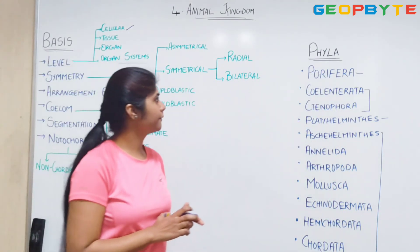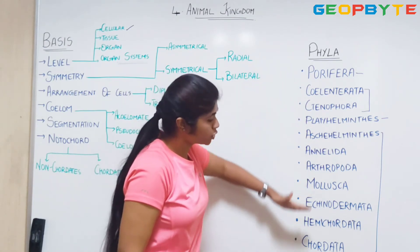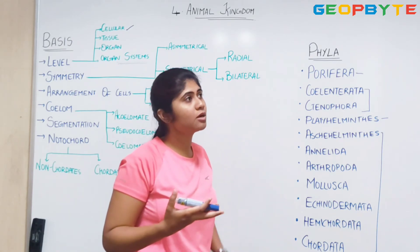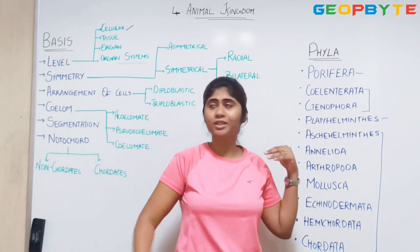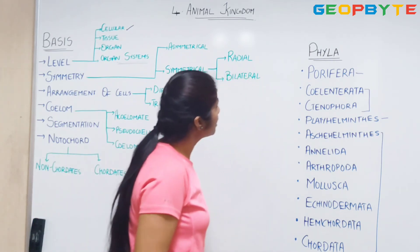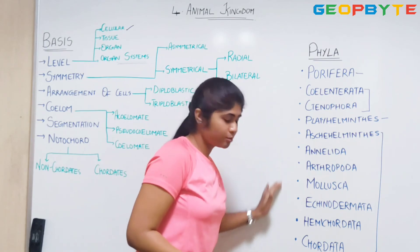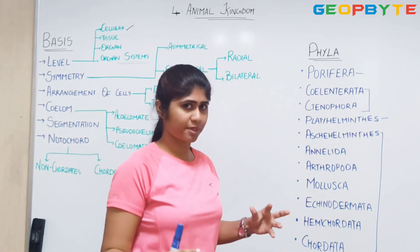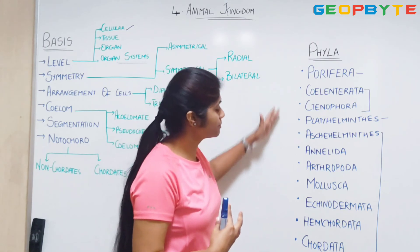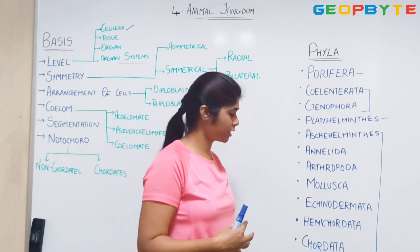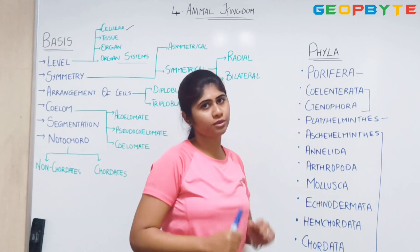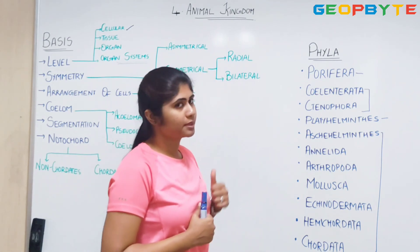If you observe, as we move from Porifera to Chordata, we are moving towards higher levels of organization and becoming a more efficient organism. Not only the level of organization — if you see all the other bases of classification, you will observe that as we proceed from Porifera to Chordata, there is higher evolution in the organism. We as human beings say we are at the highest evolution because we belong to Chordata.